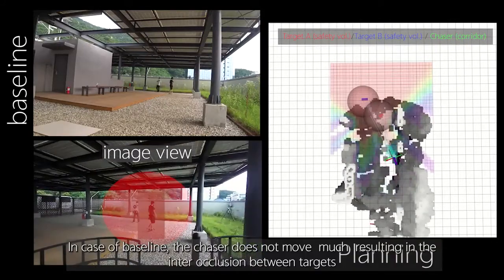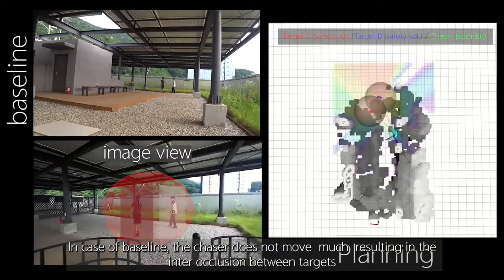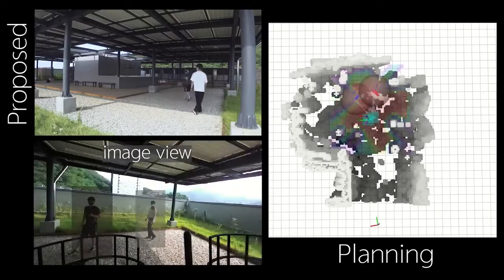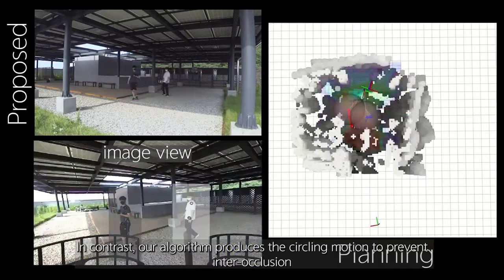In the case of baseline, the chaser does not move much, resulting in the inter-occlusion between targets. In contrast, our algorithm produces the circling motion to prevent inter-occlusion.